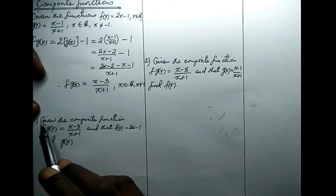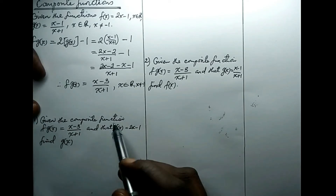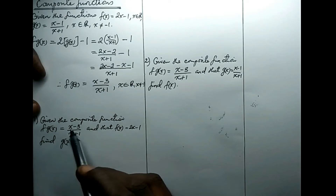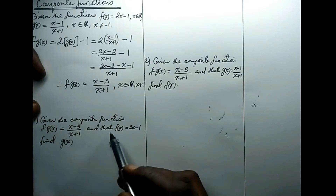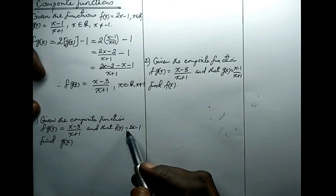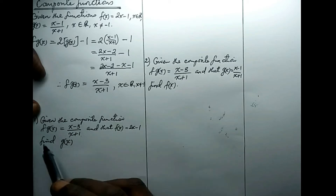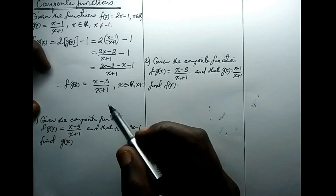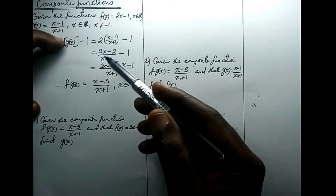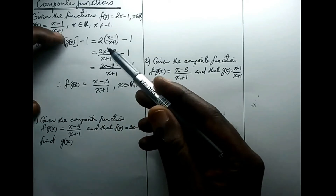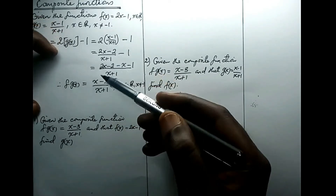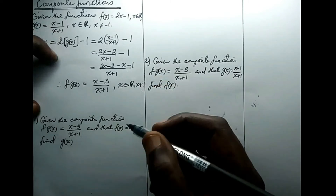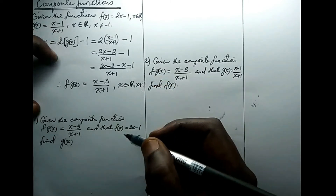In the first case, we are given that the composite function fg of x equals x minus 3 all over x plus 1, and that f of x equals 2x minus 1. Find g of x. I have decided to use the functions that we have just found the composition of, so that you can see clearly how the results come out.